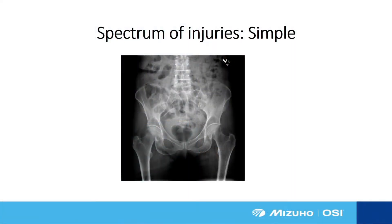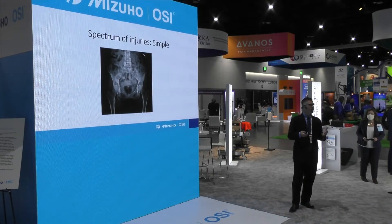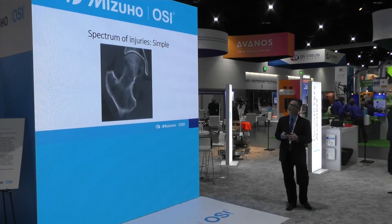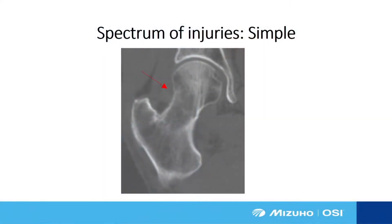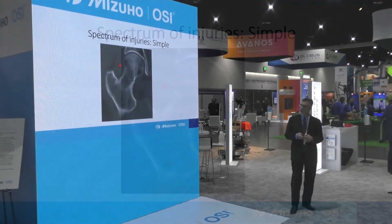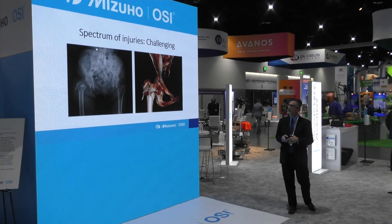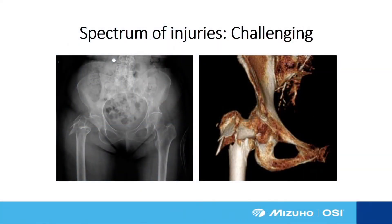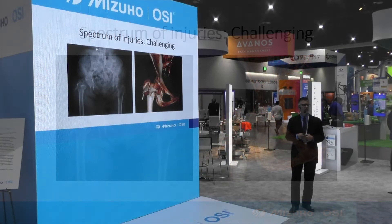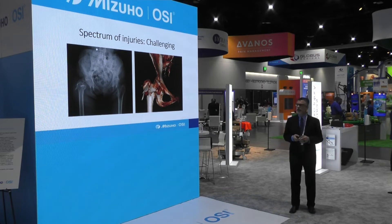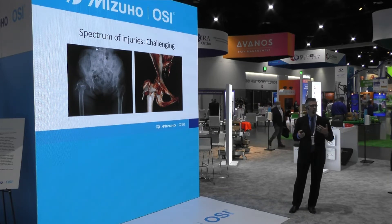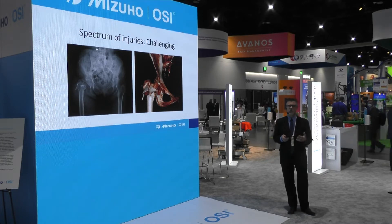In the proximal femur there is an entire spectrum of injuries — from something as subtle as a minimally valgus impacted femoral neck fracture that you actually need a CT scan zoomed in to see, where the patient presents with hip pain after a low-energy fall and there's not a lot of debate on reduction or technique, all the way to the other end of the spectrum: very poor osteoporotic bone, a sick patient with multiple medical comorbidities where you're trying to minimize your surgical footprint to maximize quality of reduction and get that patient to recovery as quickly and safely as possible.